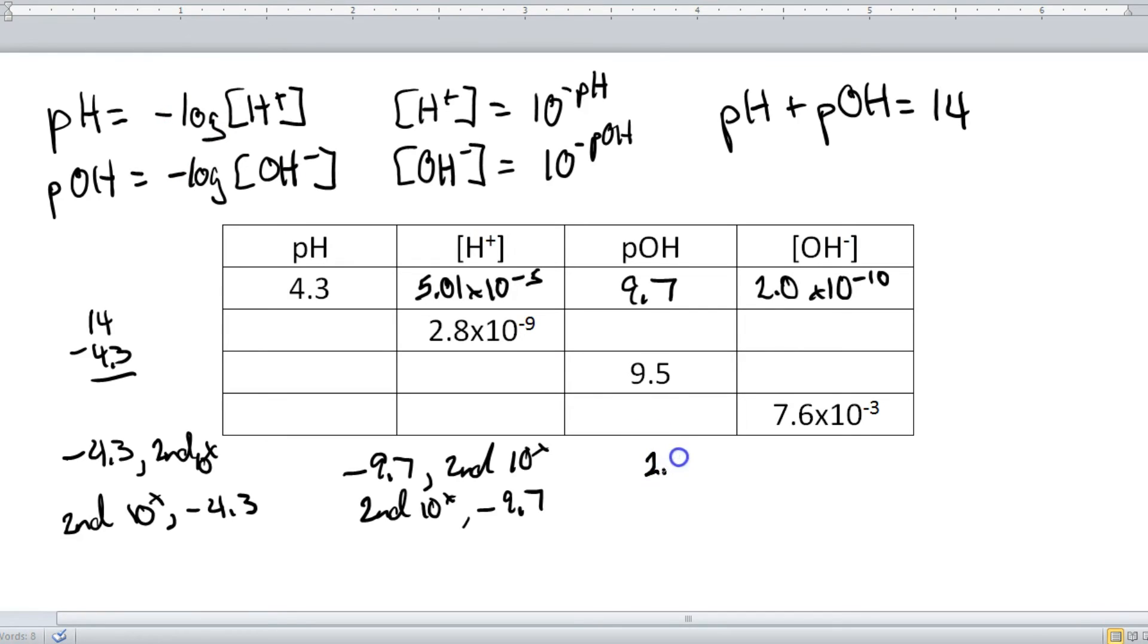I'm going to type in 2.8 EE, remember the EE button. We don't type in times 10. You type EE negative 9. I'm going to type that in first,